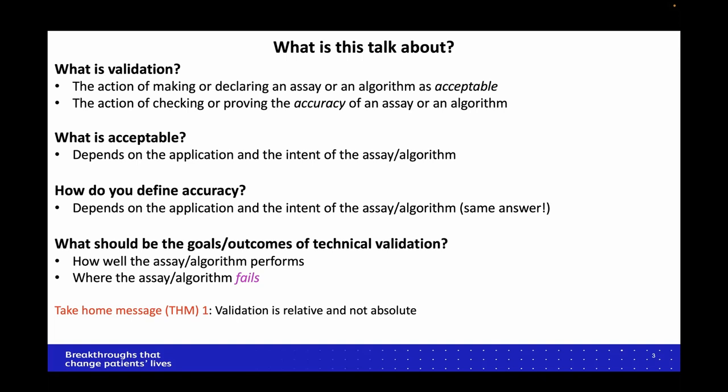How do you define accuracy? Something accurate could be within 1%, which is fairly accurate. But for many things, you don't need that level — you can be within 10% of the true value and still be considered accurate. So the question is how you define it. An overarching theme in this presentation is that validation is about understanding how good your algorithm or assay is, but also — critically — understanding where it fails. My first take-home message: validation is very relative.